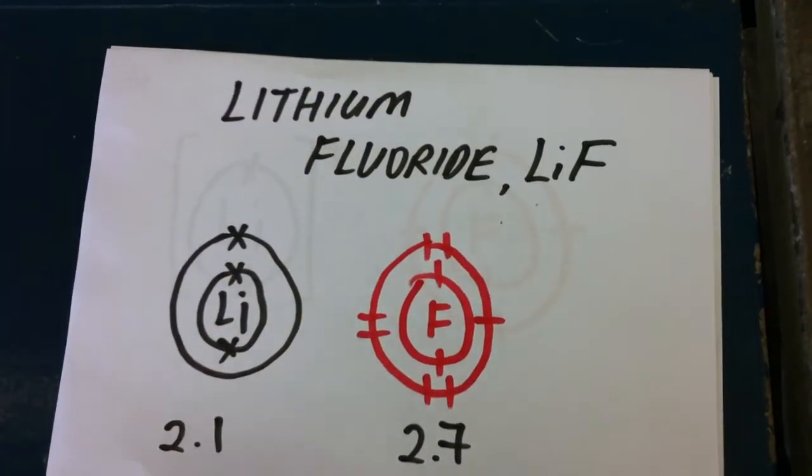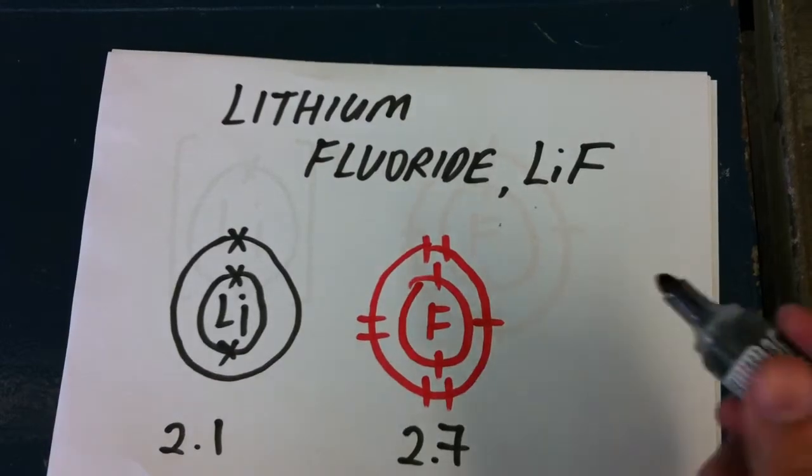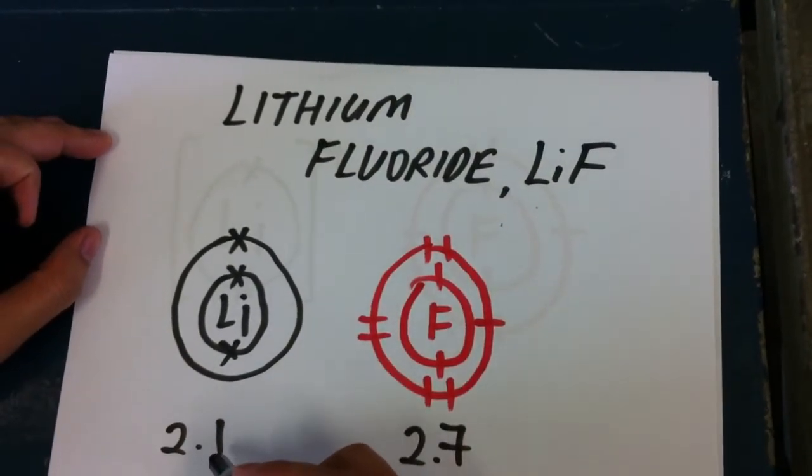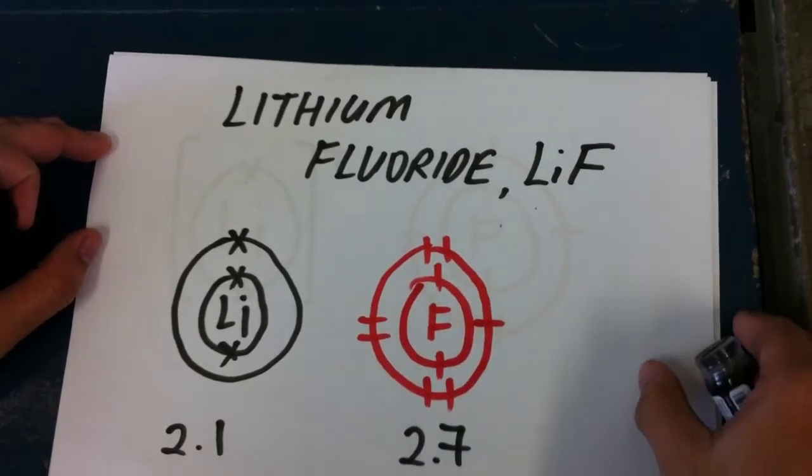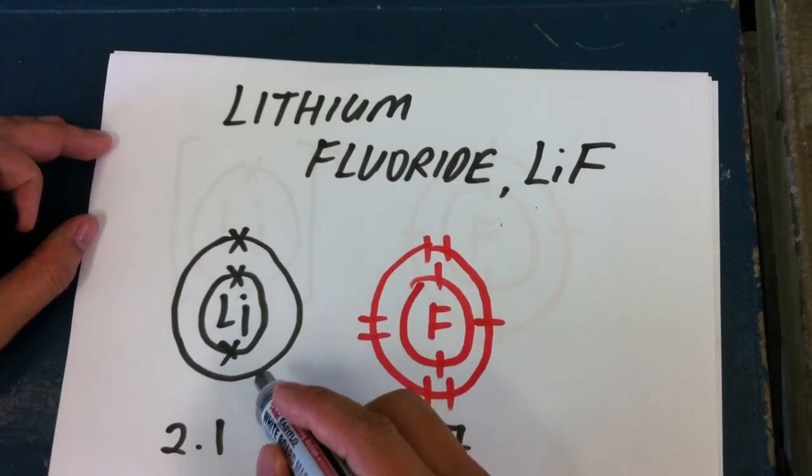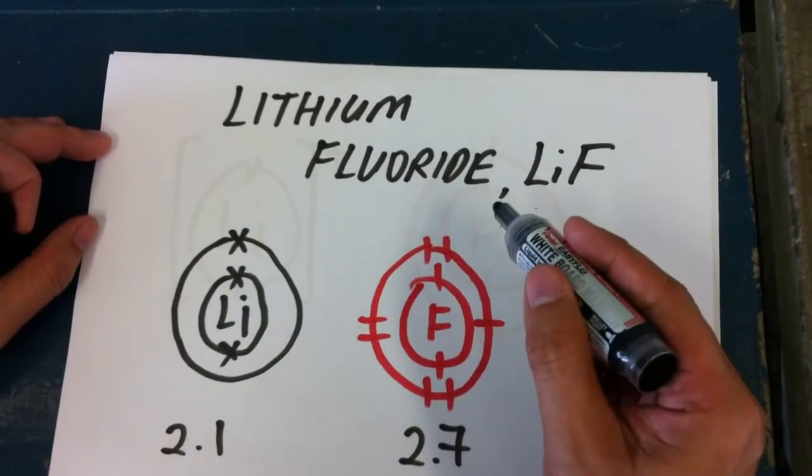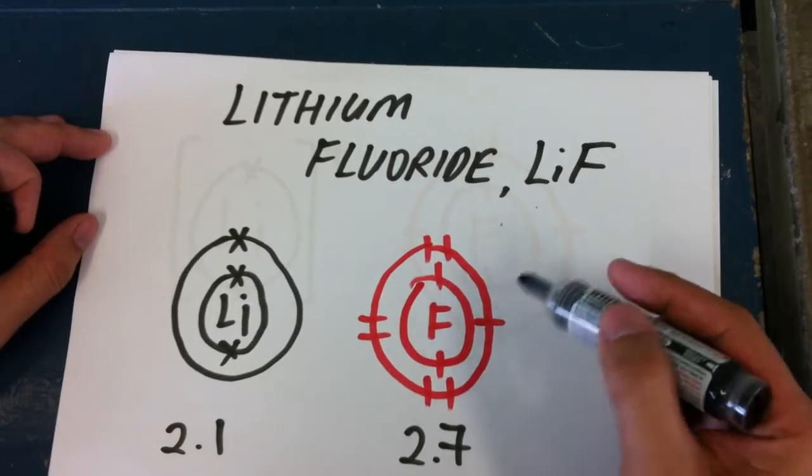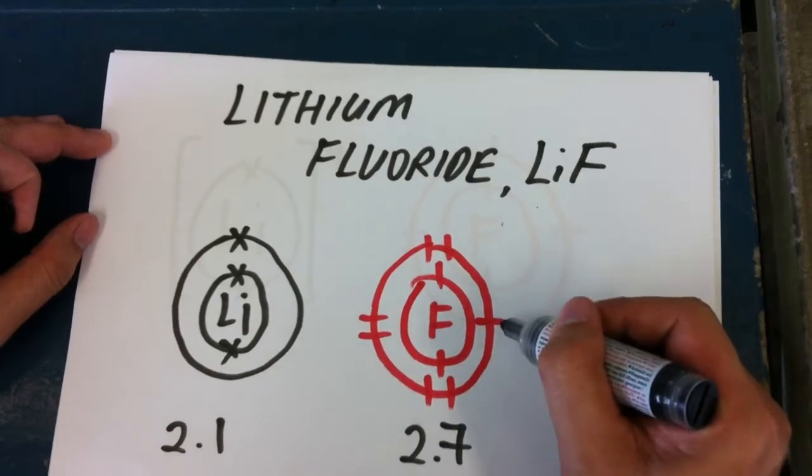We're going to start with the first ionic compound: lithium fluoride. Lithium atom has an electronic configuration of 2.1, fluorine has 2.7. So you should ask yourself, is it easier to take in seven electrons to get a stable configuration or give away one? For fluorine, is it easier to take away seven or take in one more?